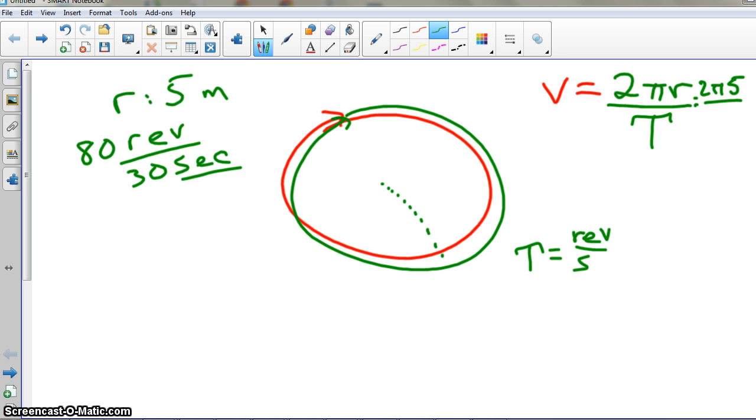We just found the frequency. We don't want that. We're going to have to go 30 divided by 30 seconds divided by 80 revolutions. That will be time per revolution. That's what we want, right? Seconds per revolution, 0.375.